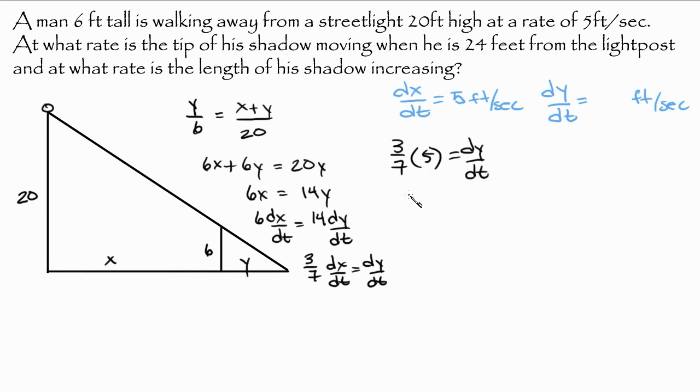And that will be 15/7 is equal to dy/dt, and this is feet per second. So I'll just go ahead and put my answer up here. Let me give you an approximation for that just so that way you can kind of put this into perspective how quickly he's going. So this is approximately equal to 2.142857143 feet per second. So I found my rate of change for y now.